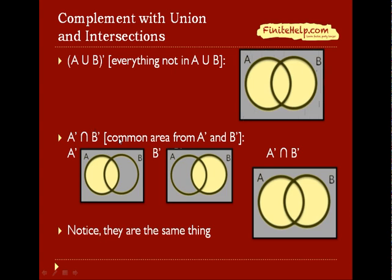A prime intersect B prime would represent the common area from A prime and B prime. First, let's break it down to A prime and B prime themselves. Here you can see, this is A prime and this is B prime. We want the intersection of these two, which is the common area between these two. As you can see, this outside shaded area is what's common between the two. So A prime intersect B prime would be only the shaded area outside of A and B.